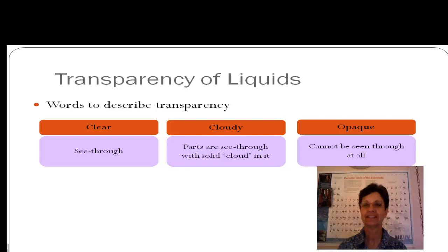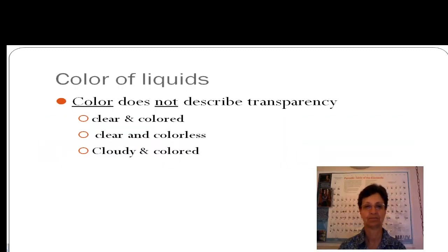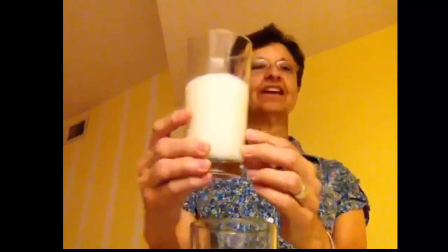Let's look at some examples of this. Here are three examples of what I am talking about. Here is a glass that is full of a liquid that is clear and colorless. This one is clear, you can see right through it, and it is blue. And here is one that is white and opaque.